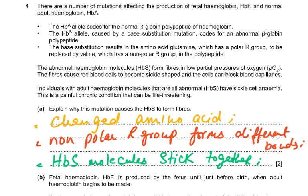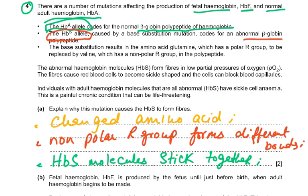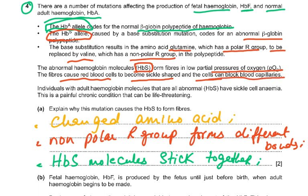Question 4: there are mutations affecting fetal hemoglobin HbF and normal adult hemoglobin. HbA codes for normal beta-globin polypeptide. HbS allele codes for a base substitution mutation producing abnormal beta-globin. The base substitution results in glutamine, which has a polar R-group, being replaced by valine, which has a non-polar R-group. HbS forms fibers at low partial pressure of oxygen, causing red blood cells to become sickle-shaped and block blood capillaries. Individuals with all abnormal HbS molecules have sickle cell anemia — a painful, chronic, life-threatening condition.